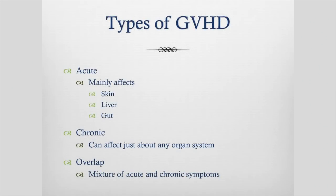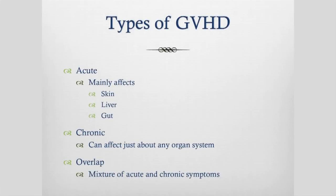There are two main types of graft versus host disease. Acute graft versus host disease mainly affects the skin, liver and gut, and this occurs early on after the transplant. Chronic graft versus host disease, as its name suggests, can be a long-term complication and can affect many organ systems in our body. And then there is an overlap syndrome where there is a mixture of acute symptoms and chronic symptoms as well. I'm going to walk through acute graft versus host disease first and then focus on chronic graft versus host disease.